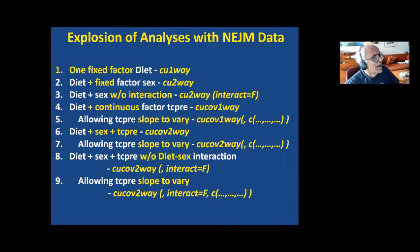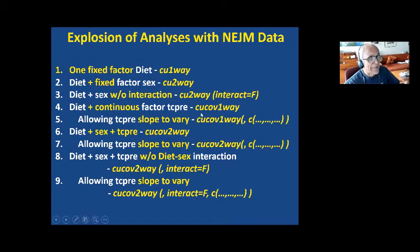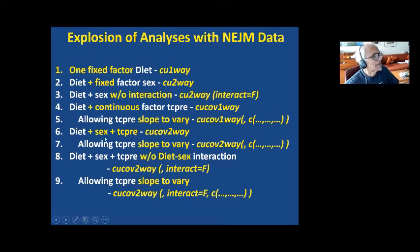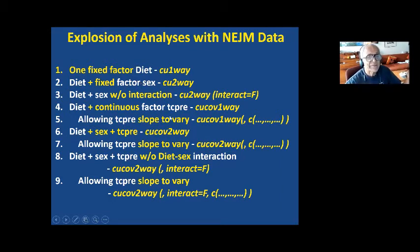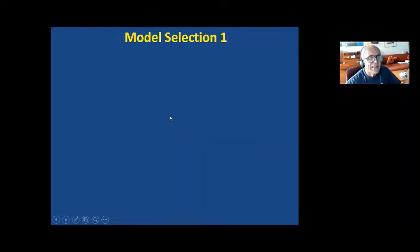Then we said, what if instead of TC change, you look at TC study? You can have diet and one continuous factor, TC-free — that's ANCOVA one-way — and there you can allow the slopes to vary in the different groups, or you can have another fixed factor besides diet, and then you have ANCOVA two-way and allow slopes to vary. This can be done without interaction and allowing slopes to vary.